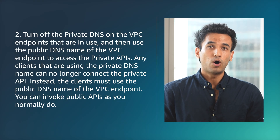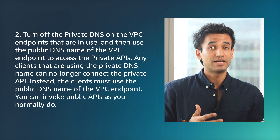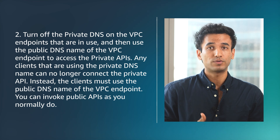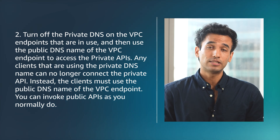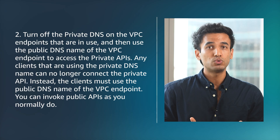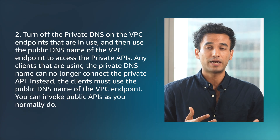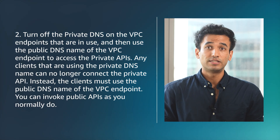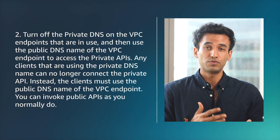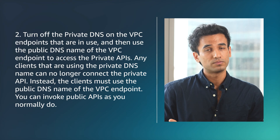Second, you can turn off the private DNS on the VPC endpoints that are in use and then use the public DNS name of the VPC endpoint to access the private APIs. Any clients that are using the private DNS name can no longer connect to the private API. Instead, the clients must use the public DNS name of the VPC endpoint. You can invoke public APIs as you normally do.